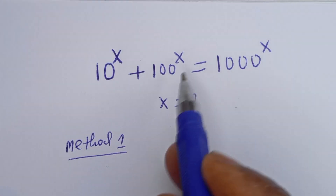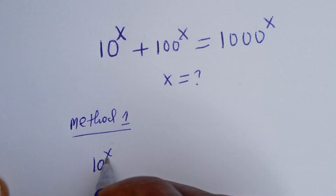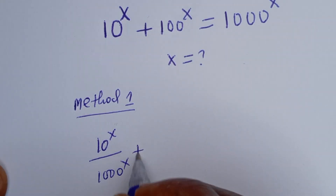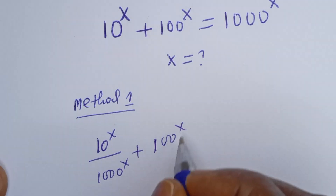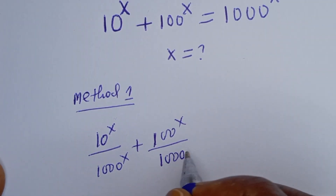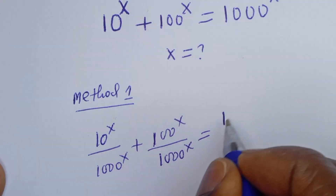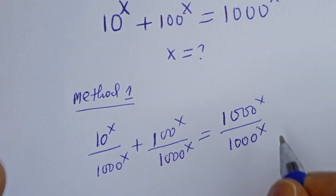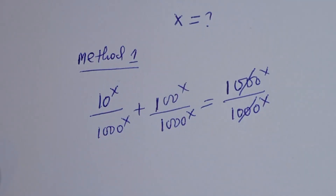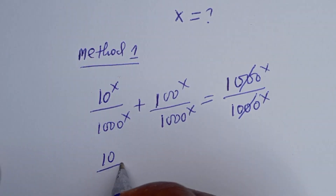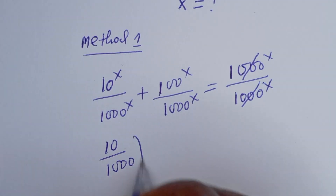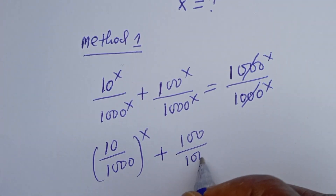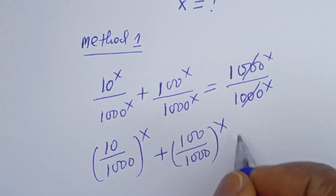Here we can divide all terms by 1000 to the power of S. That is: 10 to the power of S divided by 1000 to the power of S, plus 100 to the power of S divided by 1000 to the power of S, is equal to 1000 to the power of S divided by 1000 to the power of S. This will cancel, giving us 1.